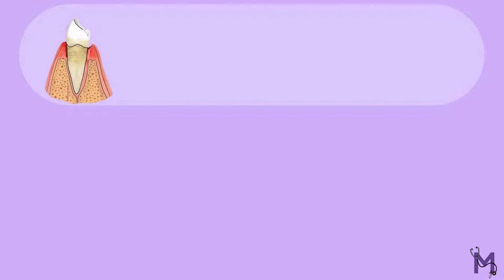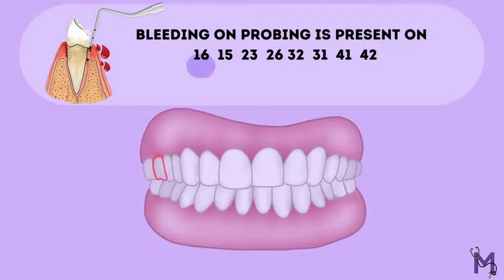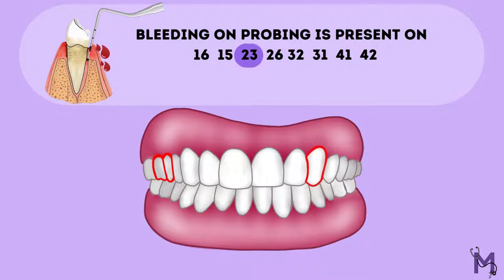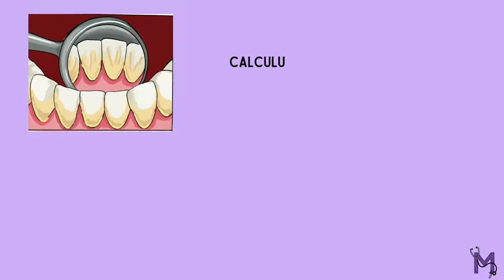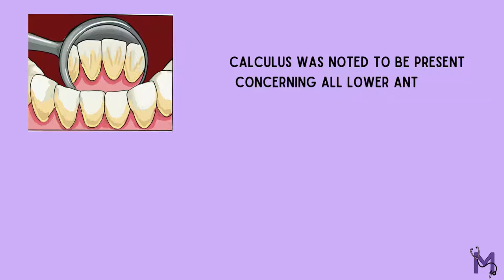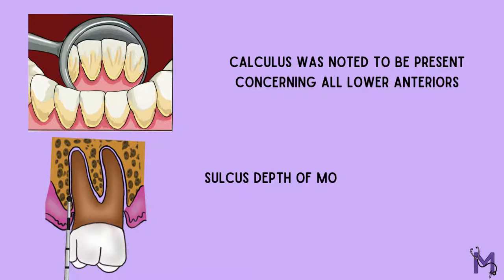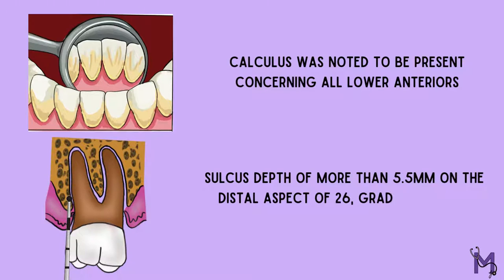Coming back to our case scenario, upon examination of the patient by walking the probe, it was noted that bleeding on probing is present on teeth 16, 15, 23, 26, 32, 31, 41 and 42. Calculus was noted to be present concerning all lower anteriors. Additionally, a sulcus depth of more than 5.5 mm was noted on the distal aspect of tooth 26, with grade 1 incipient furcation involvement.